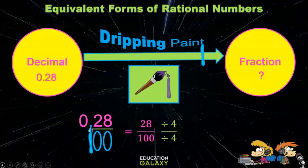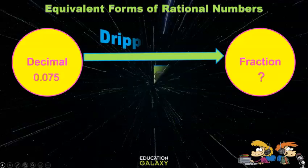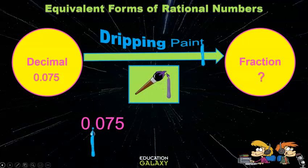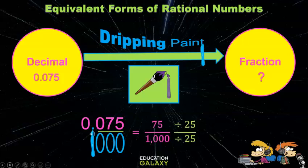Of course, simplify to get an equivalent fraction. Oh, how cool. Let me try this one. The decimal point is like a blob of paint that runs down, and then I'll put three zeros. So my fraction is seventy-five over a thousand, which I can simplify to three over forty.